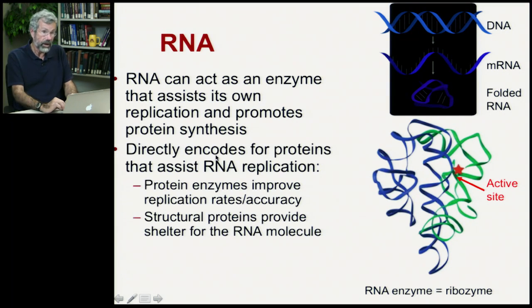And so, the RNA directly encodes for proteins that further assist in RNA replication. So, it's possible that there was a time when the RNA did all the work that's now been assigned to the proteins, but the RNA then coded for these proteins to assist in its replication. Protein would be a good addition to the earliest strains of these self-replicating RNA because protein enzymes improve replication rates and accuracy. And then, of course, with the manufacture of structural proteins, these would provide shelter for those early RNA molecules.